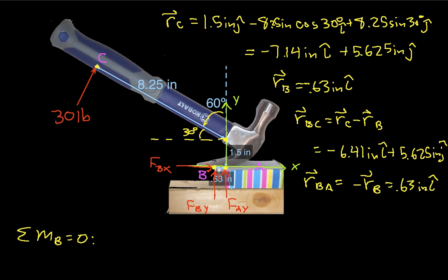Okay, so now we have then that the moments are going to be RBC cross FH plus RBA cross FA.